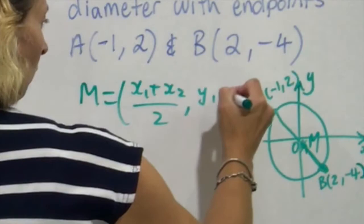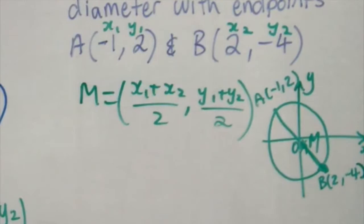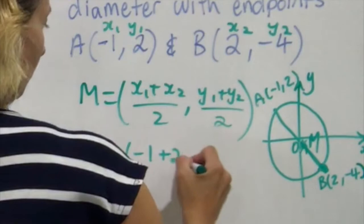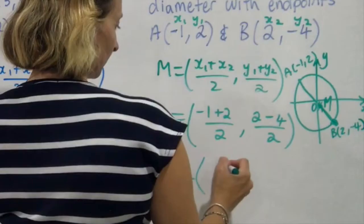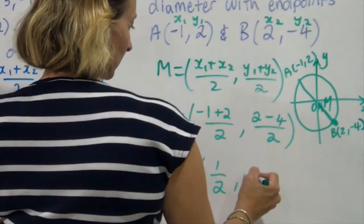So I have the midpoint formula which is x1 plus x2 on 2, y1 plus y2 on 2. Don't forget to label our points. And then all I need to do is substitute the points in and work it out. Be careful that you substitute the points in correctly into the right spot. That's a very common mistake and if you do that then you get it wrong. And we should get that as being the midpoint of my circle which is the centre. The midpoint of A and B which is the centre of my circle.